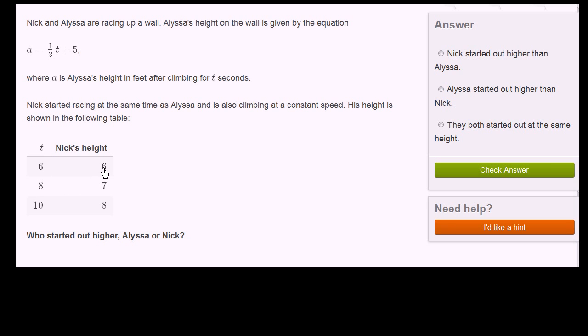This is t in seconds, time in seconds. This is height in feet. Who started out higher, Alyssa or Nick? To figure out their starting position, we just need to figure out what was their height at time equals 0. That's when this whole race started.